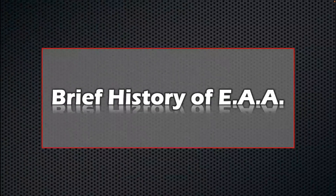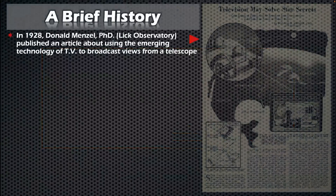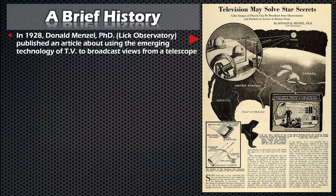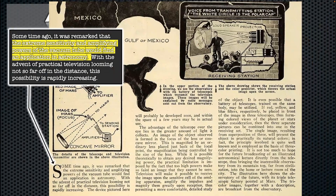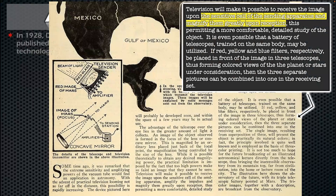When we think about where EAA came from, the history is quite impressive. It goes back to 1928, where an article from the Lick Observatory was published talking about the emerging technology of television broadcasting views from a telescope. They highlighted the extreme sensitivity and amplification powers of the vacuum tube — we could pretty much substitute 'chip' for 'vacuum tube' today — and they really had a good view into the future.